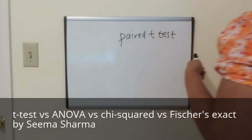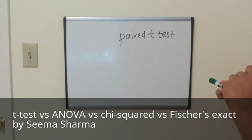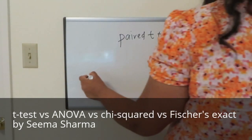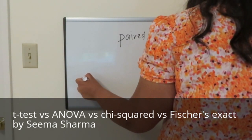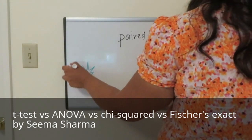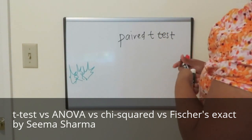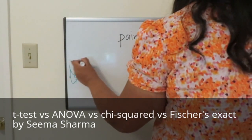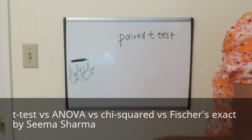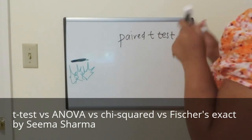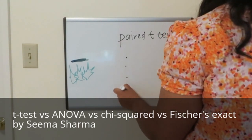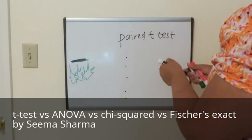I'm going to first talk about the paired t-test. Say for example you're studying a population of leaves. You take the leaves and initially leave them in the shade. They start out in the shade and you measure their size every so often. For each leaf you have a bunch of data points from when they were in the shade.